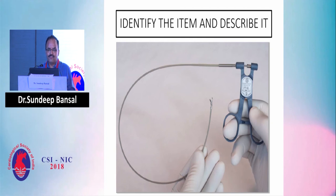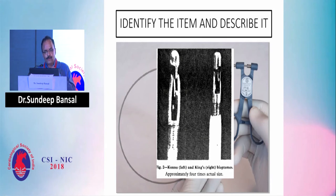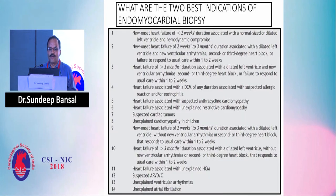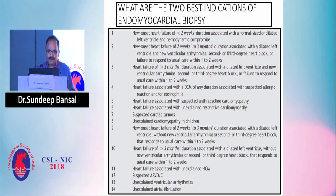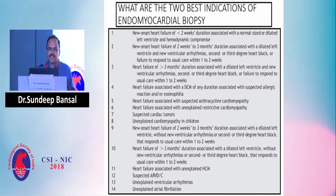This is the tip of Connor's bioptome or King's bioptome. The two best indications for endomyocardial biopsy, besides graft rejection, are: new onset heart failure within two weeks with a dilated left ventricle, and new onset ventricular arrhythmias or heart blocks within two weeks to three months. These are the two major indications for endomyocardial biopsy.